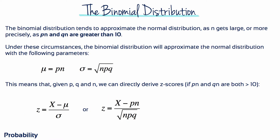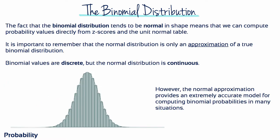The binomial distribution tends to approximate the normal distribution as N gets large, or more precisely as P times N and Q times N are both greater than 10. Under these circumstances, the binomial distribution will approximate the normal distribution with the mean equal to P times N, and the standard deviation equal to the square root of N times P times Q. This means that given P, Q, and N, we can directly derive z-scores, and compute probability values directly from z-scores in the unit normal table.